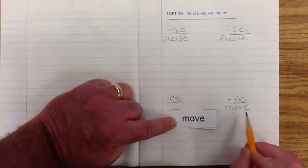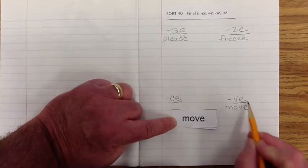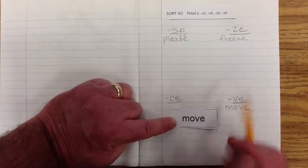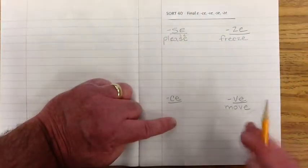All right. So, we've got move. V. Move. It has that V sound, doesn't it? So, let's go ahead and review so far. We've got the move. V. Makes the V sound. That one's... We understand that pretty easy.